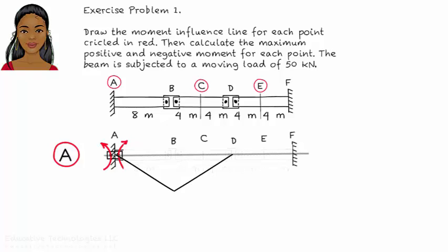According to the influence line, no positive moment develops at A. And the maximum negative moment at A occurs when the load is at B.